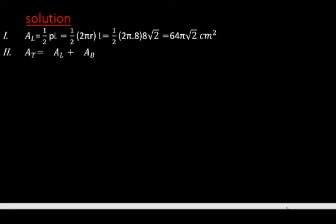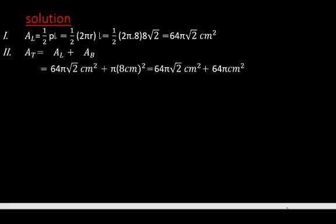The second question is about the total surface area of the right circular cone. We consider the sum of the lateral surface area and the area of the base. The lateral surface area is 64π√2 cm², and we add π × radius², which is π × 8² = 64π cm². Their sum equals 64π(√2 + 1) square centimeters, factoring out 64π from both terms.